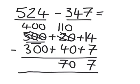And 400 take away 300 is 100. And then we add them all up. So, 177.